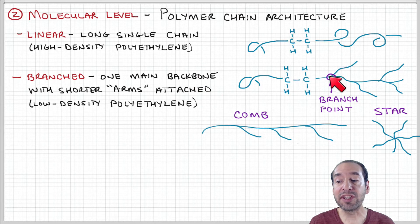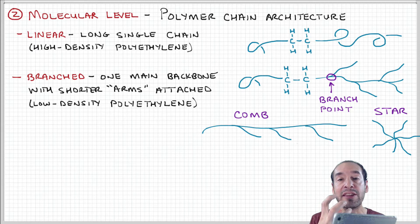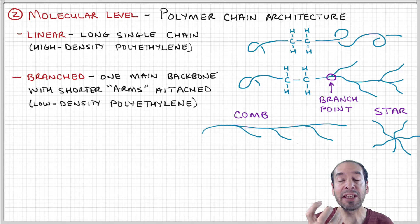Because of these branching points, low-density polyethylene is restricted from compacting densely enough to crystallize. Low-density polyethylene materials are softer and have lower mechanical strength.